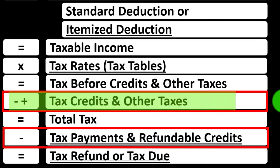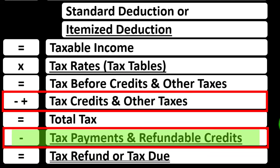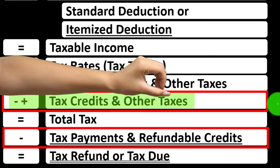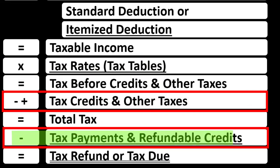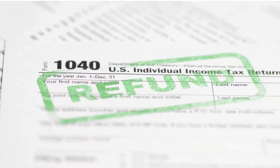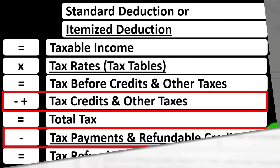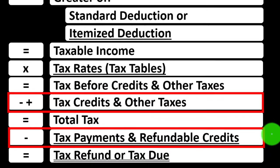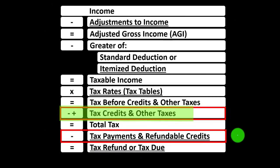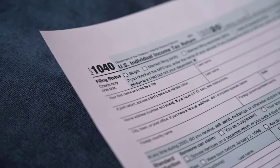Credits can be broken into two main categories: non-refundable credits and refundable credits. Non-refundable credits won't take your tax liability below zero. Refundable credits could — and if they did, you'd effectively receive a benefit payment, though it would still be called a refund. Some credits have both a non-refundable and a refundable portion.